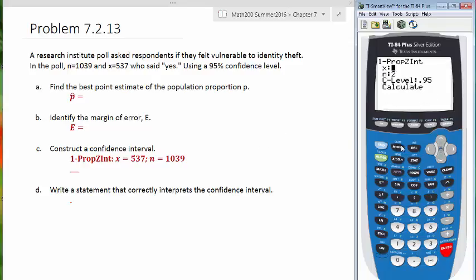And then we put in the values for X and N. Our X is 537. Enter. And our N is 1039. Our confidence level, C level, confidence level is 95%, and that was given to us. And then we'll ask it to calculate.